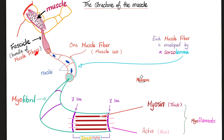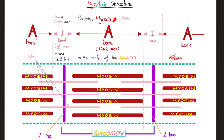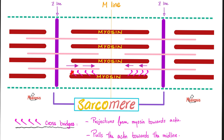Each muscle is made of a bundle of muscle fibers, or myofibers — the actual muscle cells. Each muscle fiber is made of myofibrils. Each myofibril is made of myofilaments, i.e. actin and myosin. Actin is the thin filament; myosin is the thick filament. Here's the A-band, here's the I-band. Myosin extends its cross bridges to grab the actin and pull it towards the midline or the M-line, shortening the size of the muscle and causing the insertion to come closer to the origin. Hashtag contraction.